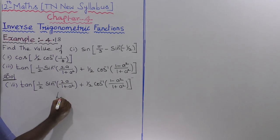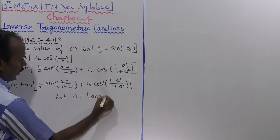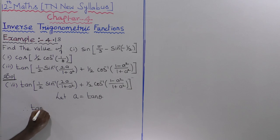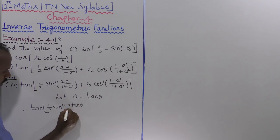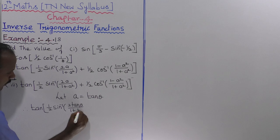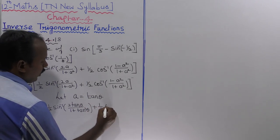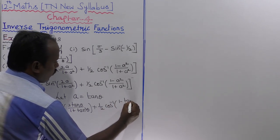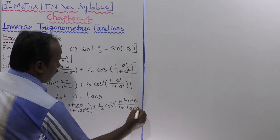Now let us assume that a is equal to tan theta. Therefore, tan of into 1 by 2 sin inverse of 2 tan theta whole divided by 1 plus tan square theta, next plus 1 by 2 into cos inverse of 1 minus tan square theta whole divided by 1 plus tan square theta.